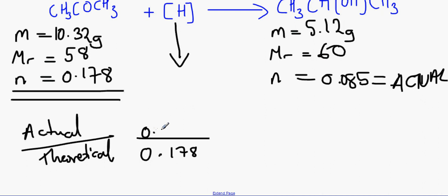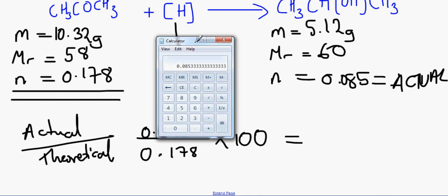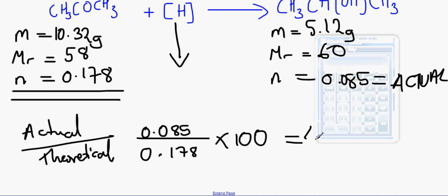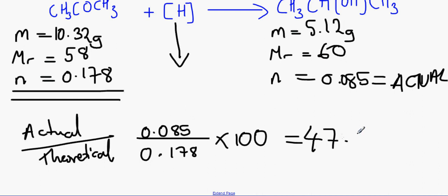This is the number of moles for our actual. So if we just plug it here, 0.085, and then just do the equation where we have 0.085 divided by 0.178 and then we times it by 100 because we want to get the percentage, it would make 47.75%.